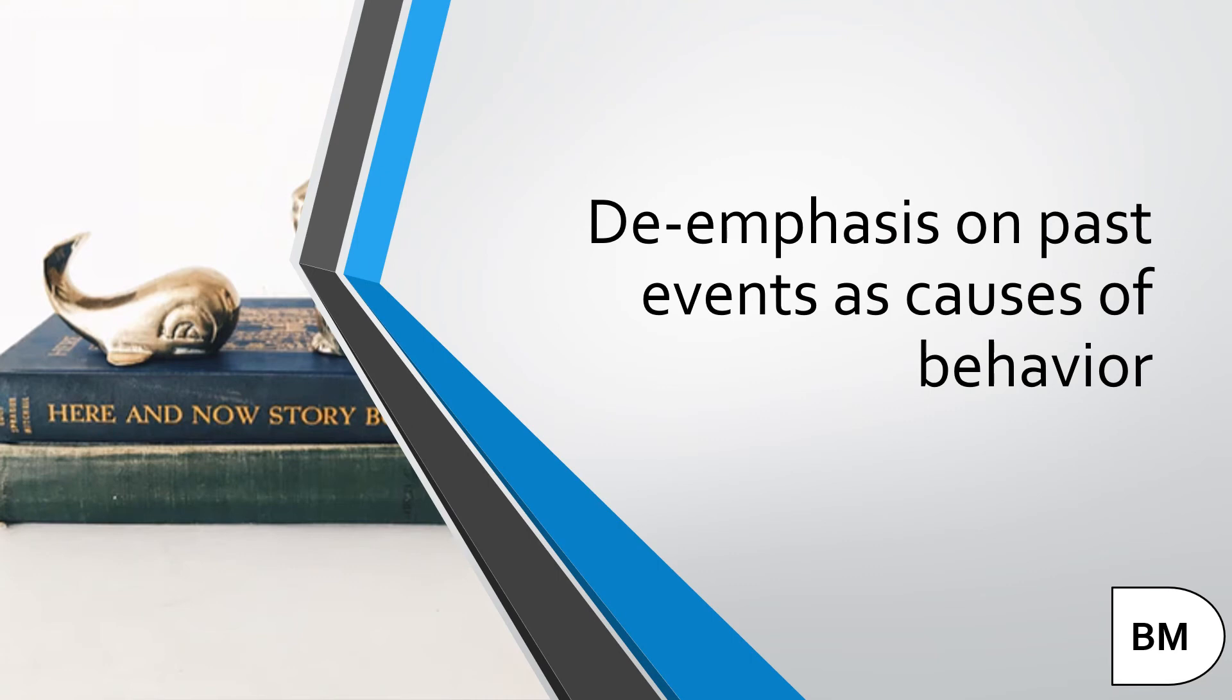The emphasis on past events as causes of behavior. As stated earlier, behavior modification places emphasis on recent environmental events as the causes of behavior. However, knowledge of the past also provides useful information about environmental events related to the current behavior. For example, previous learning experiences have been shown to influence current behavior. Therefore, understanding these learning experiences can be valuable in analyzing current behavior and choosing behavior modification procedures.